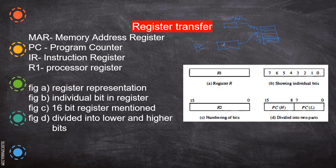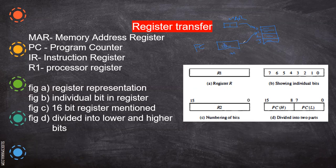The program counter will always point to the next location to be executed in sequence. After execution of one instruction, the MAR will take the value from the program counter, because that is what is going to be executed next. The program counter increments — for example to 2 — pointing to the next location. So the memory address register points to the current location being executed, whereas the program counter always points to the next instruction.